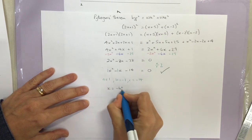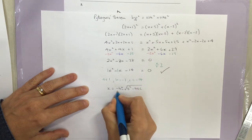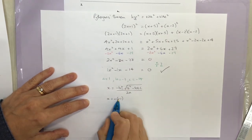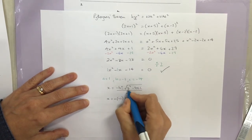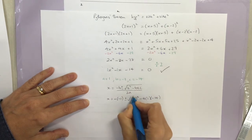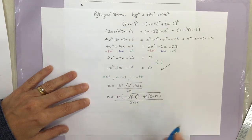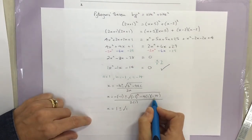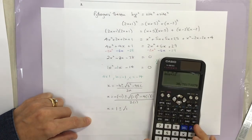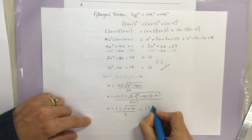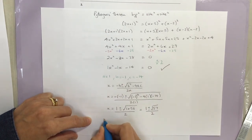Writing out the quadratic formula and substituting: x = (−b ± √(b² − 4ac)) / 2a. So x = (−(−1) ± √((−1)² − 4 × 1 × −14)) / (2 × 1). Be careful: minus minus 1 is positive 1, and (−1)² is positive 1. Then minus 4 times minus 14 gives plus 56, so inside the square root: 1 + 56 = 57. This gives x = (1 ± √57) / 2.